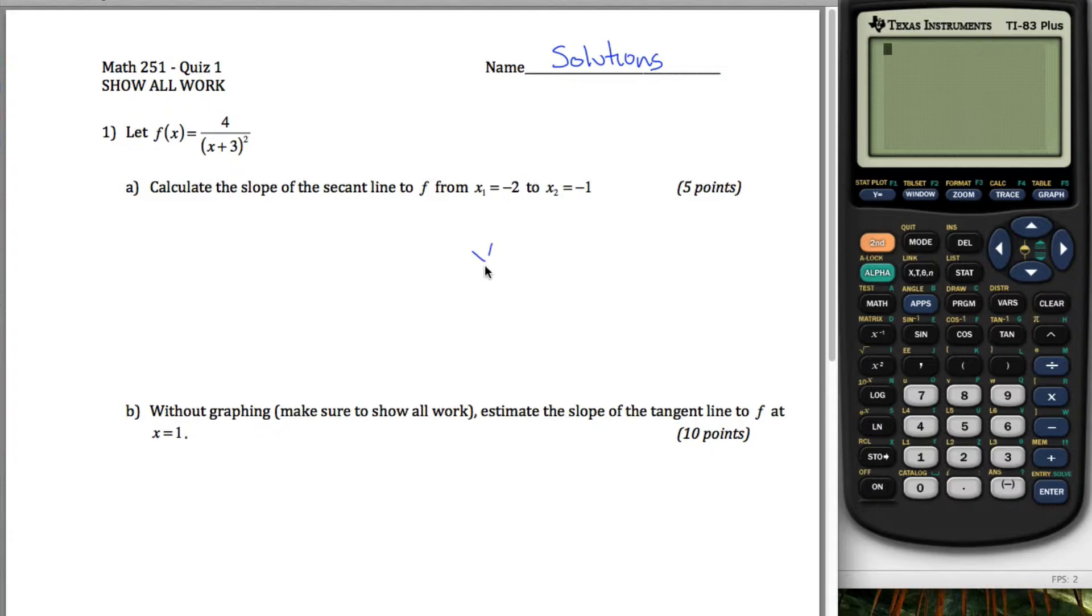So the nice thing is when you're calculating the slope of the secant line, what you need are two points and they're giving us all the information we need to use this formula right here. That m, the slope of the secant line.